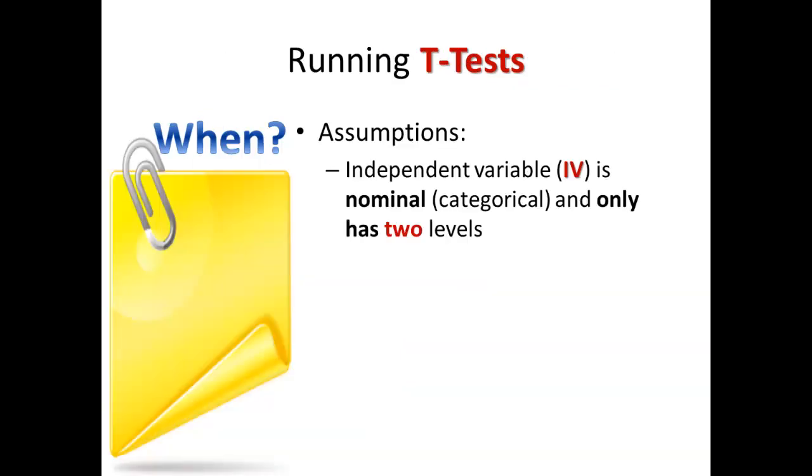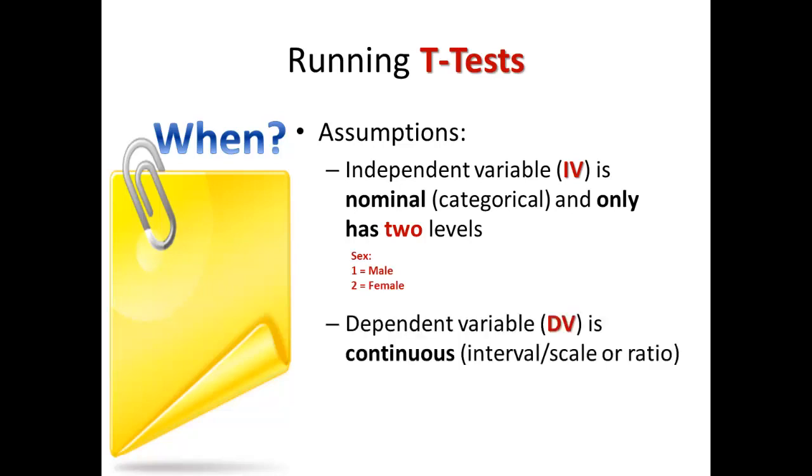Running T-tests, you would use these when the independent variable is gathering nominal or categorical level data and only has two variables, such as in the example we talked about earlier. Sex has only two levels in this variable, male and female. Your dependent variable, however, has to gather interval or scale or ratio level data. It is a continuous variable, such as in an agreement scale of a 1 to 4 scale. Think about it as the dependent variable has to be one that you can run means on.